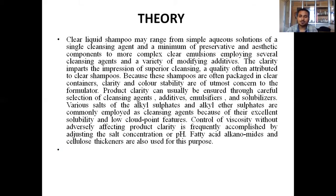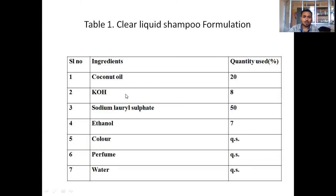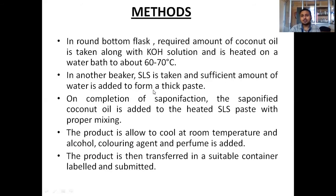Next, the materials and methods section. The ingredients required for the preparation of shampoo are: coconut oil, sodium hydroxide, sodium lauryl sulfate, ethanol, coloring agent, perfume, and water. These are the minimum requirements for the preparation of the shampoo sample. Next we come to the method.